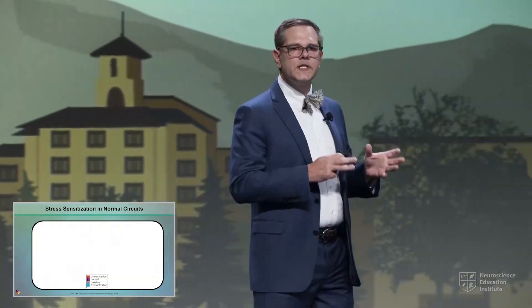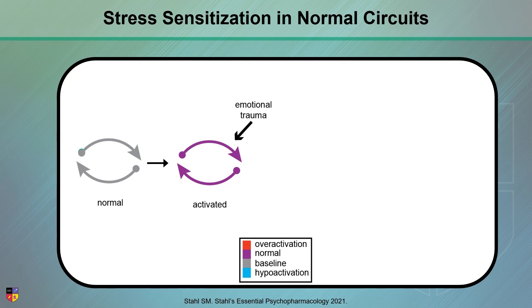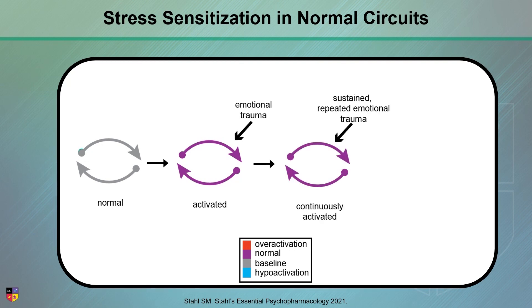However, when we think about stress sensitization in these circuits, a very different picture evolves. We see that normal circuit with a basal level of activity, and we see emotional trauma leading to activation. But with sustained, repeated emotional trauma, we see a persistent, continuously activated circuit.